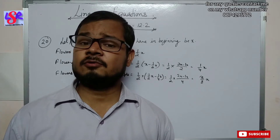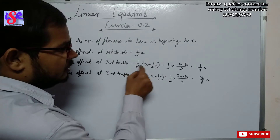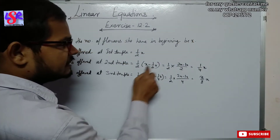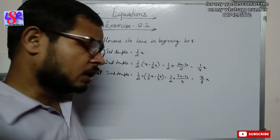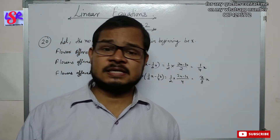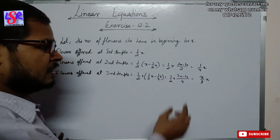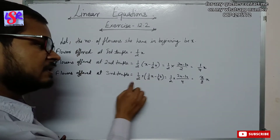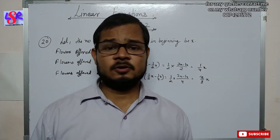In the second temple she offered half of what she had remaining, that is half of (x − 1/2 x) = (1/4)x. In the third temple she offered half of what remained after the second temple, which works out to x/8 flowers.